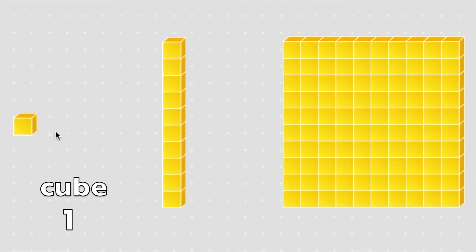We have a cube which is worth one. We have a long which has the value of 10 because there are 10 cubes that make up a long. And then we have a flat and a flat is worth 100. There are 100 of these little cubes to make up one flat, or there are 10 of these longs that make up the one flat.